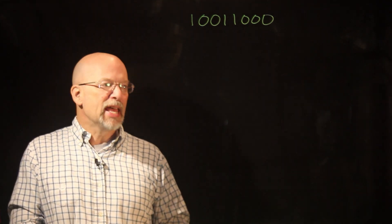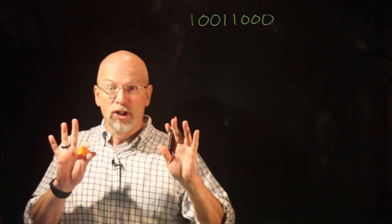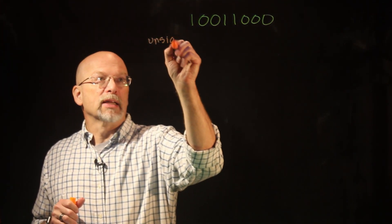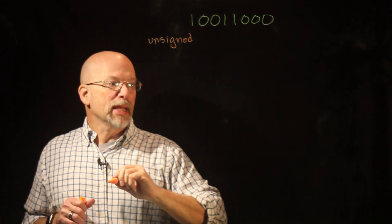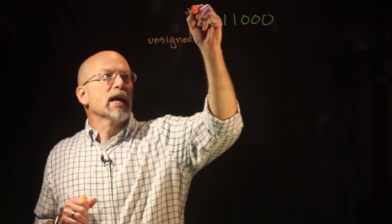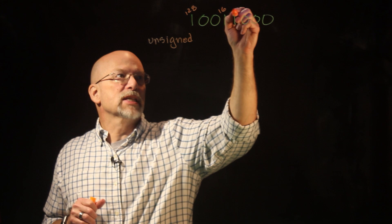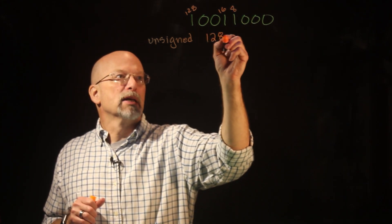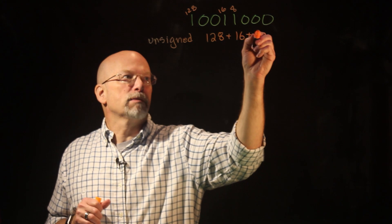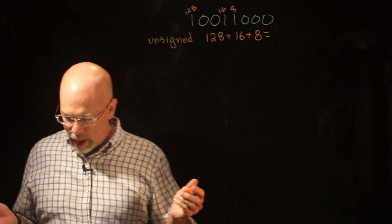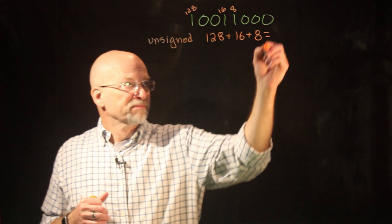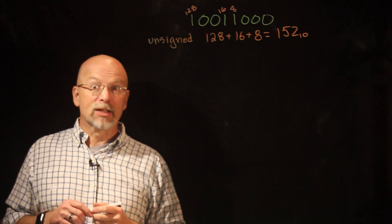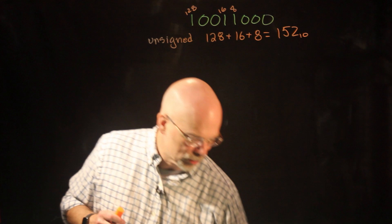For example, it could be in what we called unsigned binary. So we have unsigned, which means this is the 128 place, this is the 16 place, this is the 8 place. So this is 128 plus 16 plus 8, which equals 152 base 10. That's one thing it could represent.